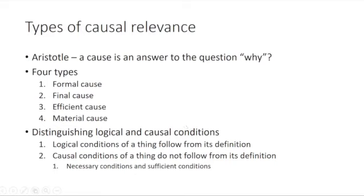There can be necessary and sufficient conditions in either case — logical or causal. We already talked about necessary and sufficient logical conditions when discussing definitions. We can also have necessary and sufficient causal conditions. My taking a marker and running it across paper in just the right way would be a sufficient causal condition for bringing about a square — that's enough to make it happen — but not necessary, because somebody else could draw a square differently. Some kind of mark is necessary for a square, so we can talk about necessary causal conditions, which are more akin to what Aristotle calls a material cause.